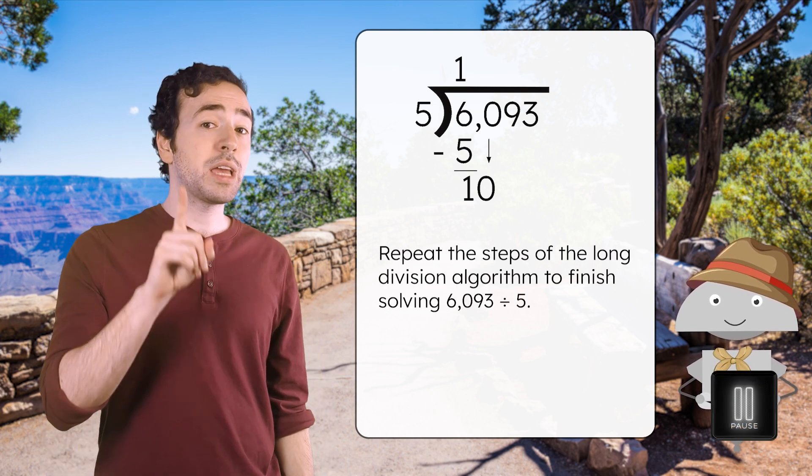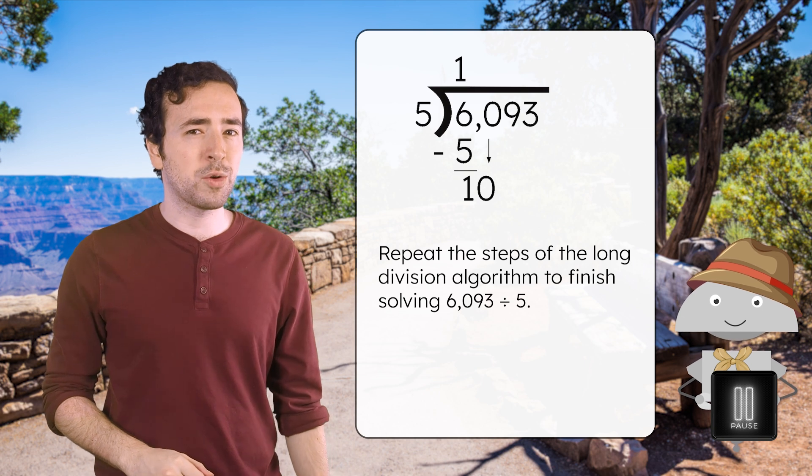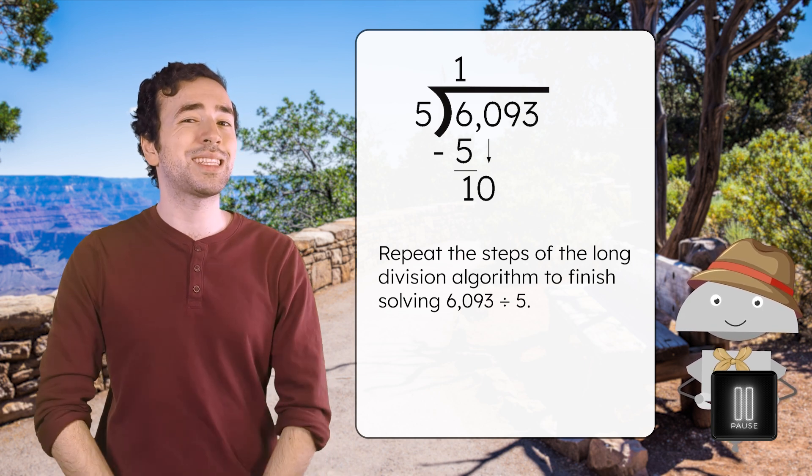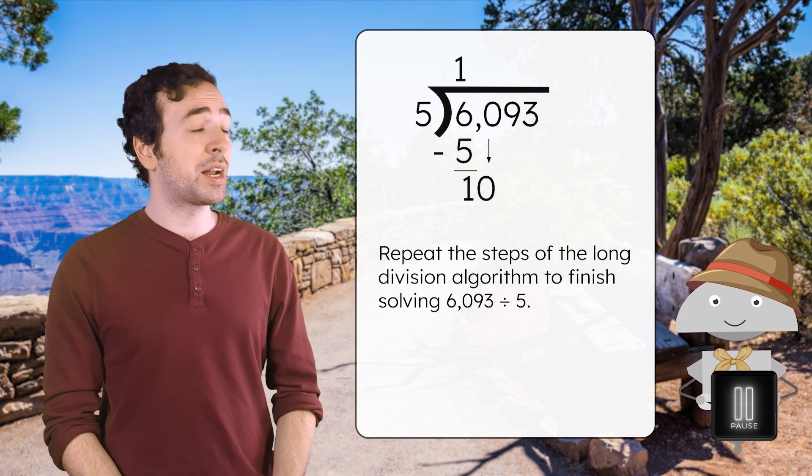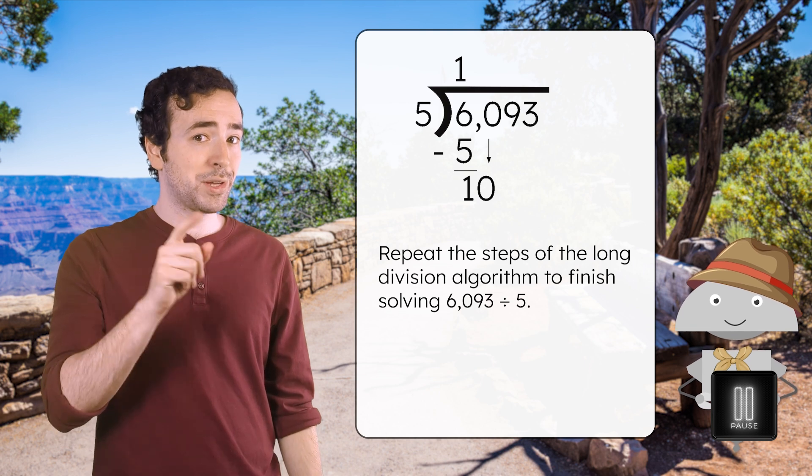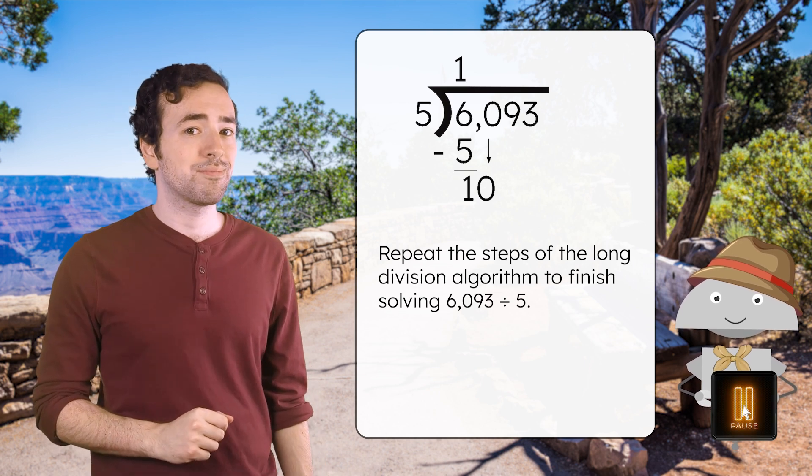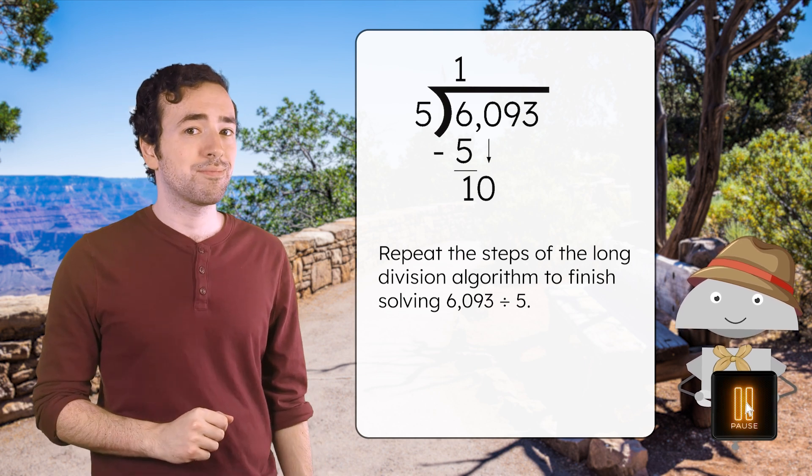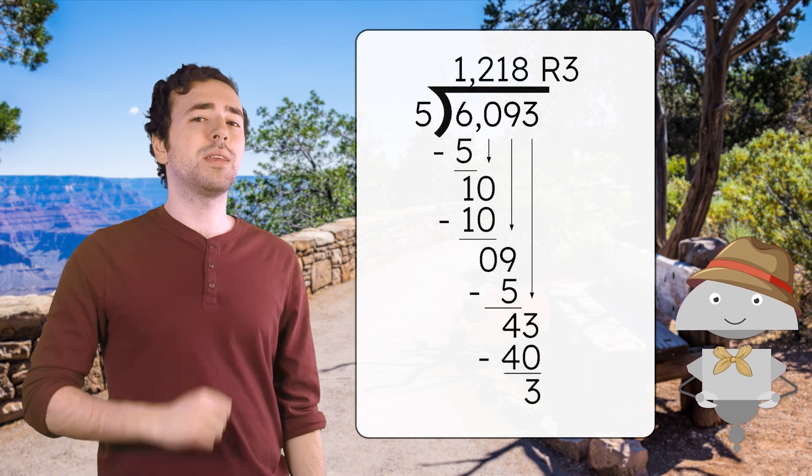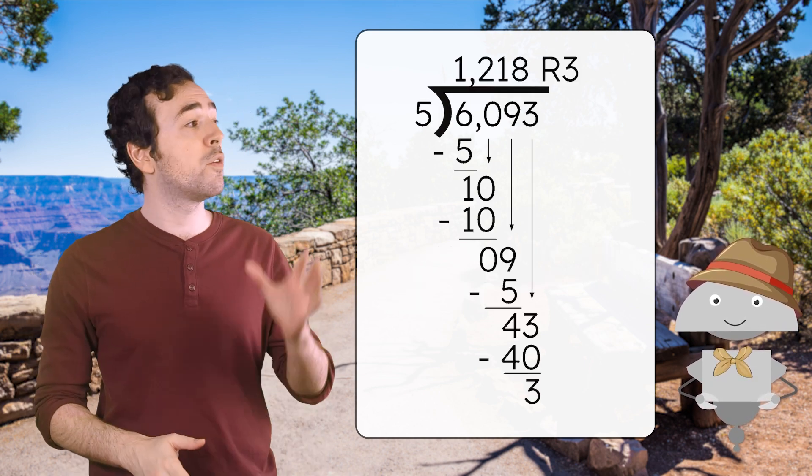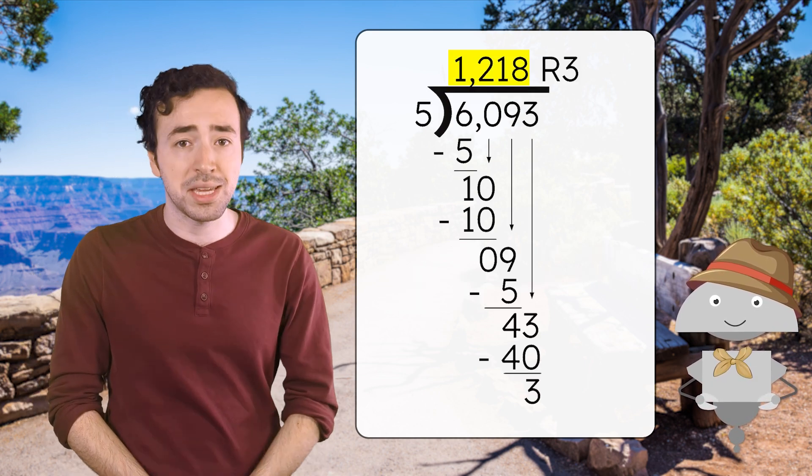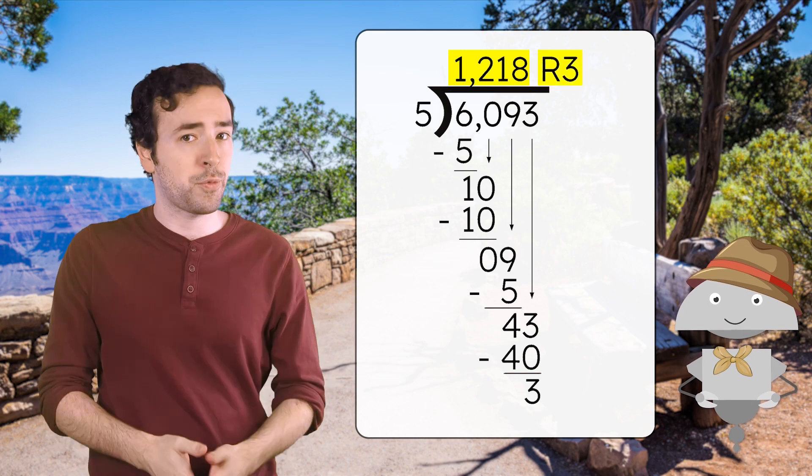Pause the video here and repeat the steps of the long division algorithm to finish solving 6,093 divided by five. Record your thinking in your guided notes. By repeating the steps, we should have a whole number quotient of 1,218, and a remainder of three.